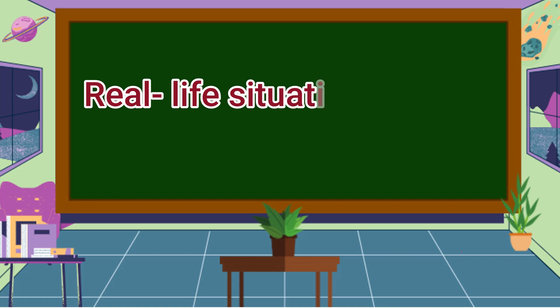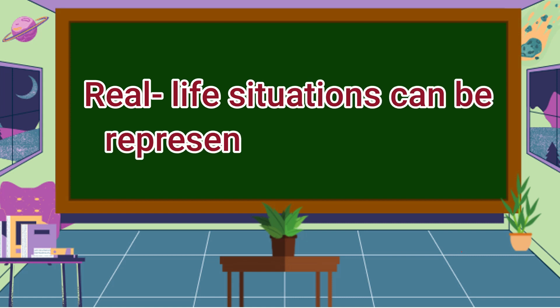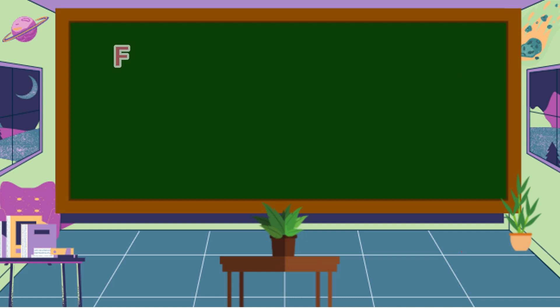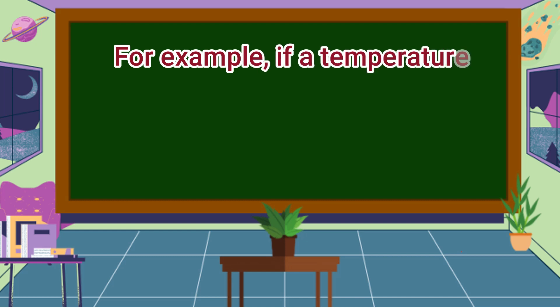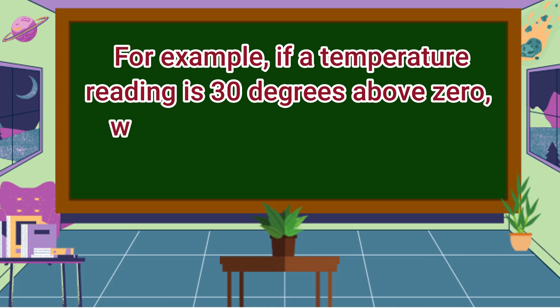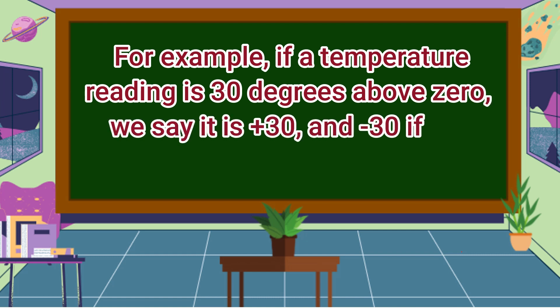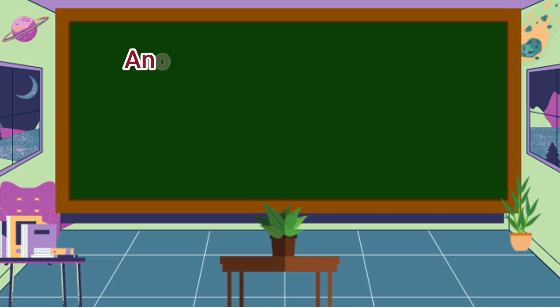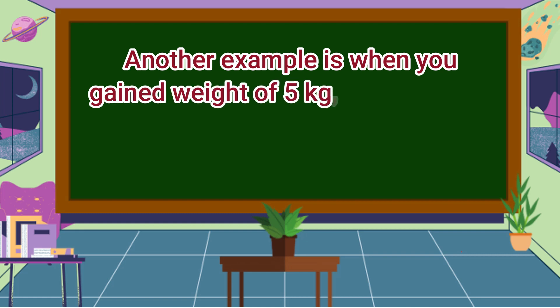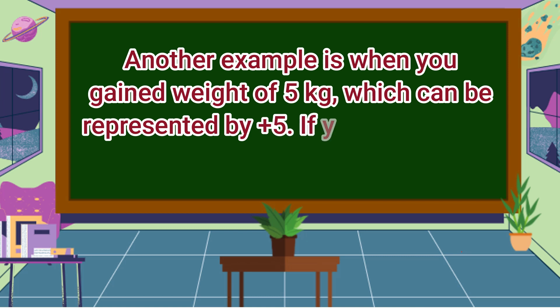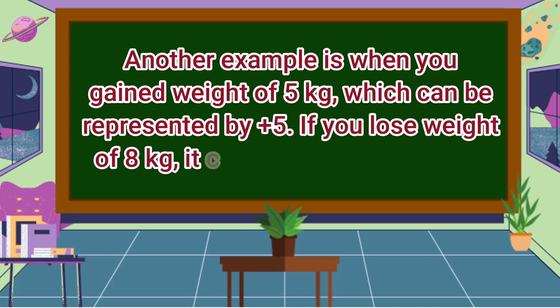Real-life situations can be represented by integers. For example, if a temperature reading is 30 degrees above zero, we say it is positive 30 and negative 30 if it is 30 degrees below zero. Another example is when you gained weight of 5 kilogram, which can be represented by positive 5. If you lose weight of 8 kilogram, it can be represented by negative 8.